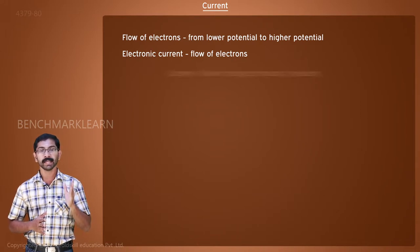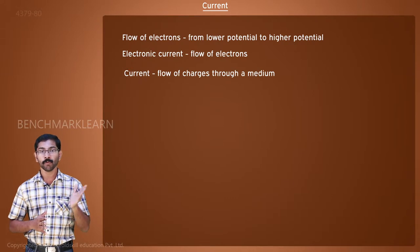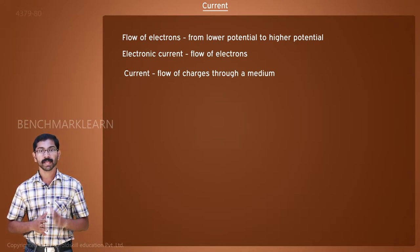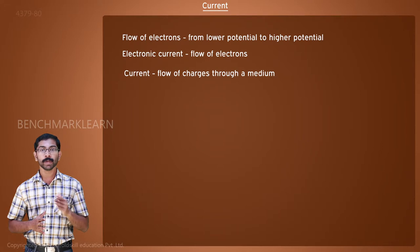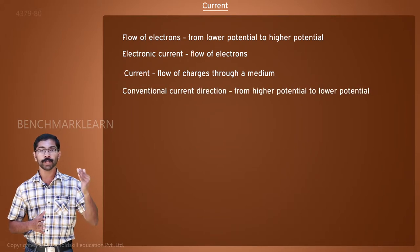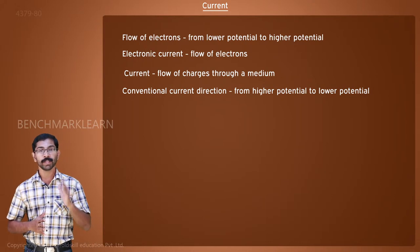That is why they considered current as the flow of positive charges. This assumption leads to a current flowing from a higher potential to a lower potential. This is called the conventional current.